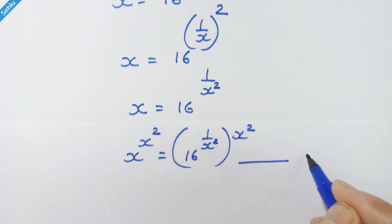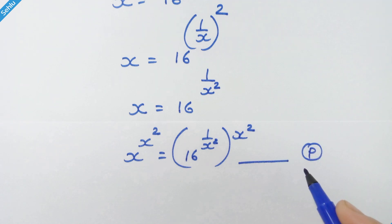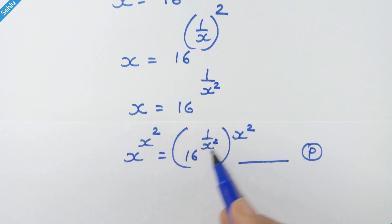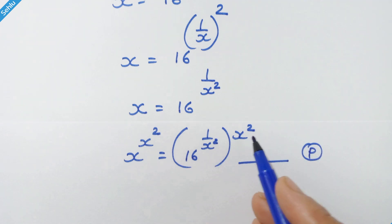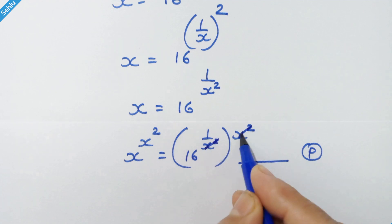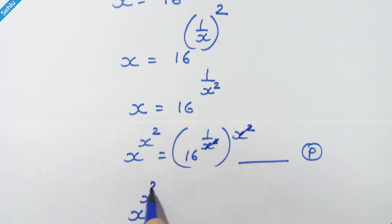Let's name this equation p — this will be referenced at the end. Here the two x squares will multiply and cancel. So we have x raised to x square is equal to 16.